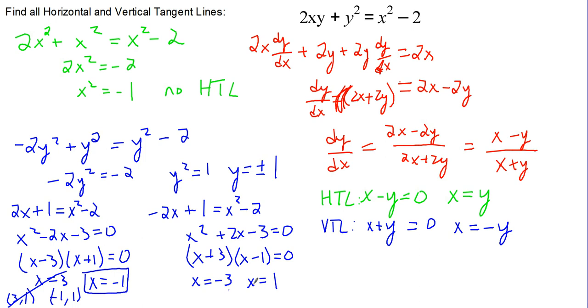If we plug in negative 3 with negative 1 for y, that does not work out. But the (1, negative 1) does, and so we have another vertical tangent line at x equals 1.